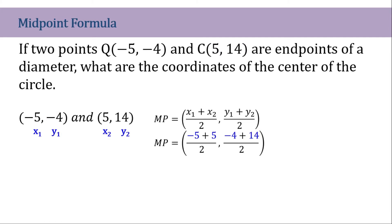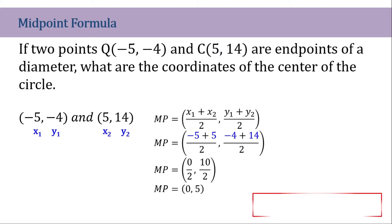Now let's simplify it. We have 0 over 2 and 10 over 2. Simplifying further, that is 0 and negative 5. So the coordinate of the center of the circle is (0, negative 5).